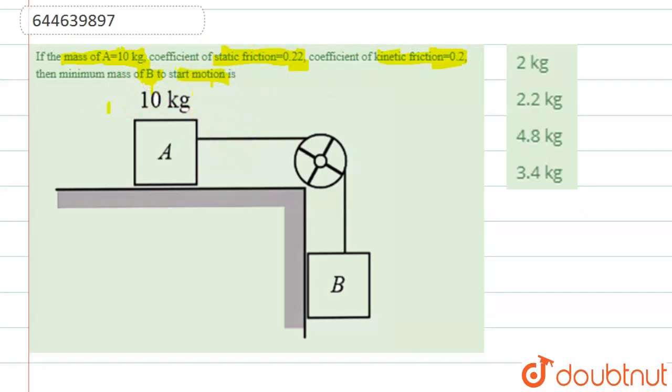So minimum mass of B must be equal to the max value of static friction. This means the force on B must apply such a way that this friction force must be overcome—the static friction.